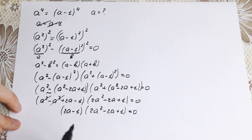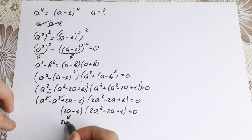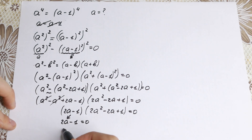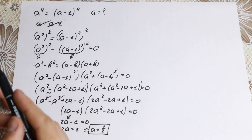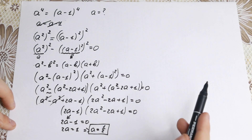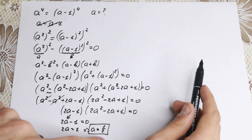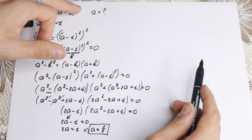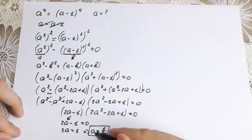From the first factor, 2a − 1 = 0, so 2a = 1, giving a = 1/2. This is our first root. Note that if you used the shortcut method — taking the fourth root without accounting for absolute value — you might find a = 1/2, but you completely miss the complex roots hiding in the second factor.